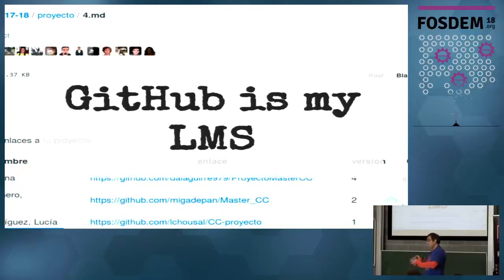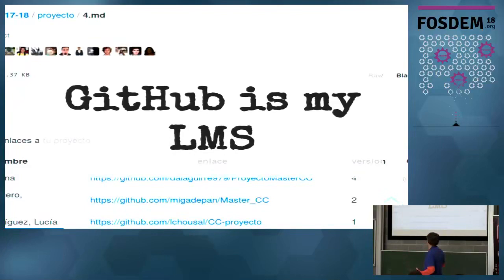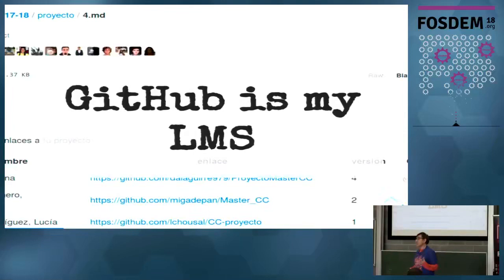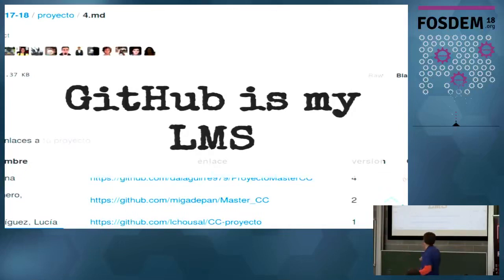This is the actual page they use for turning in assignments. They have all their results in a repo like this one — this is the actual page I used this year in the master class. They put their project, do milestones, and submit each milestone by modifying a specific file in my repository, adding the direction of their repository and the version number. The version is important — we'll see that later on.